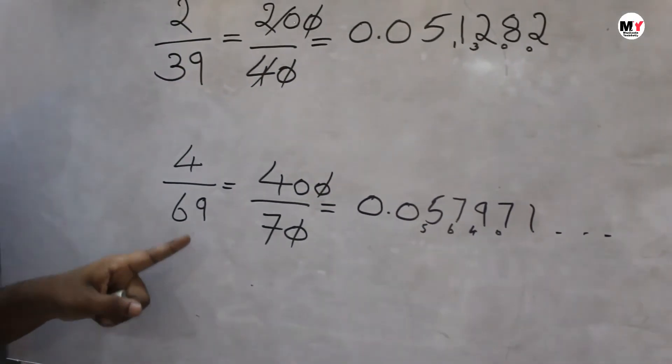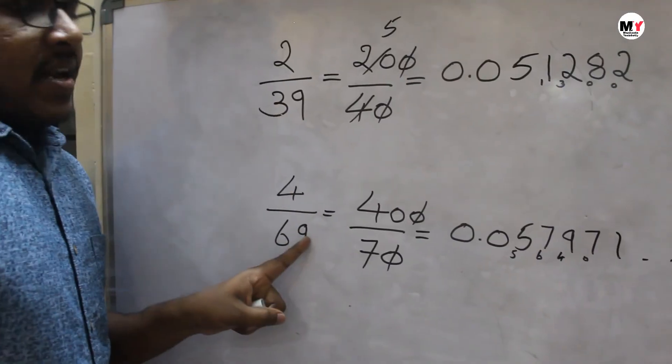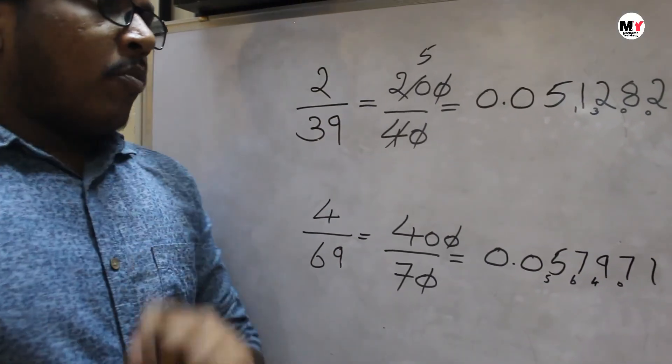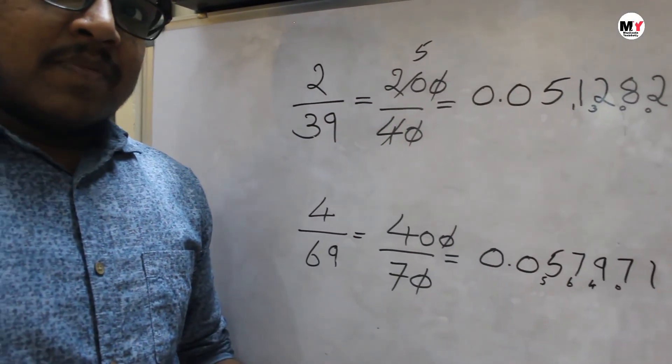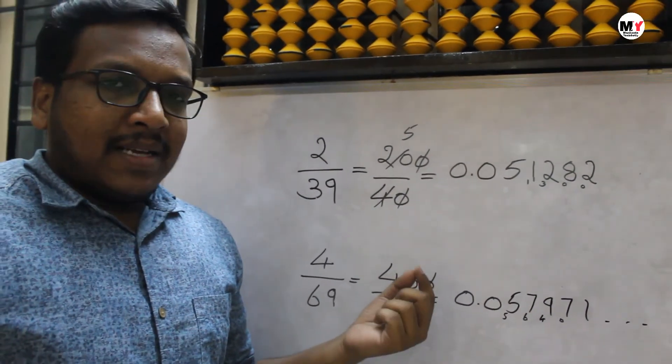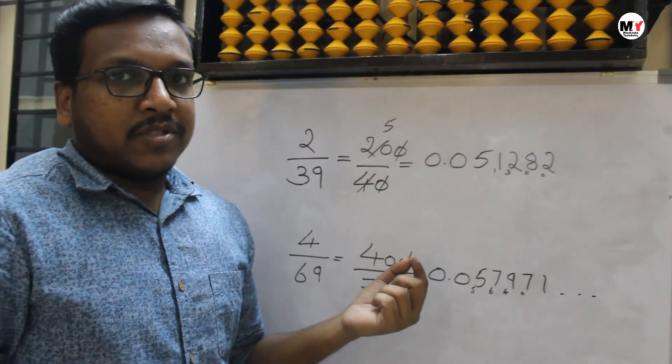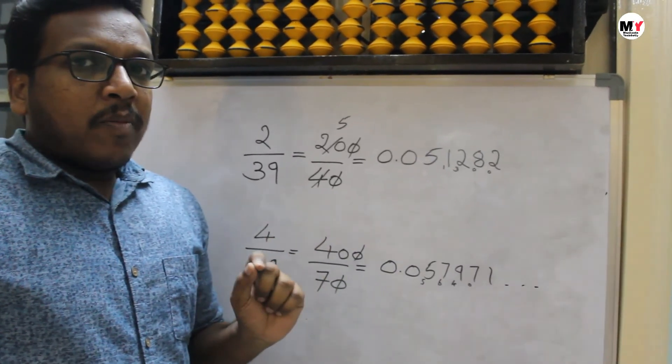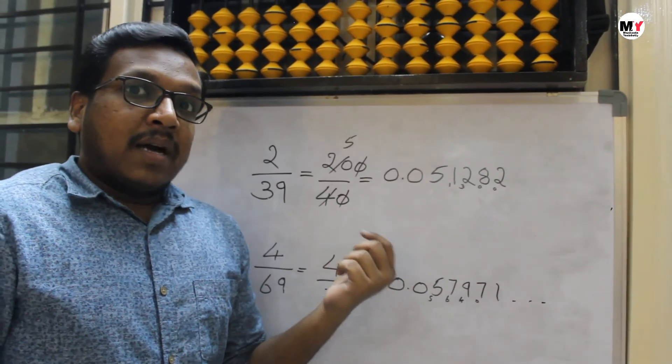So this is the division of fraction where denominator ends with 9. I hope everyone has understood this method. This is simple method, easy method. This will be helpful in the competitive exams when you are doing the objective questions. Very simple method. Hope you all like it and you all understood it.